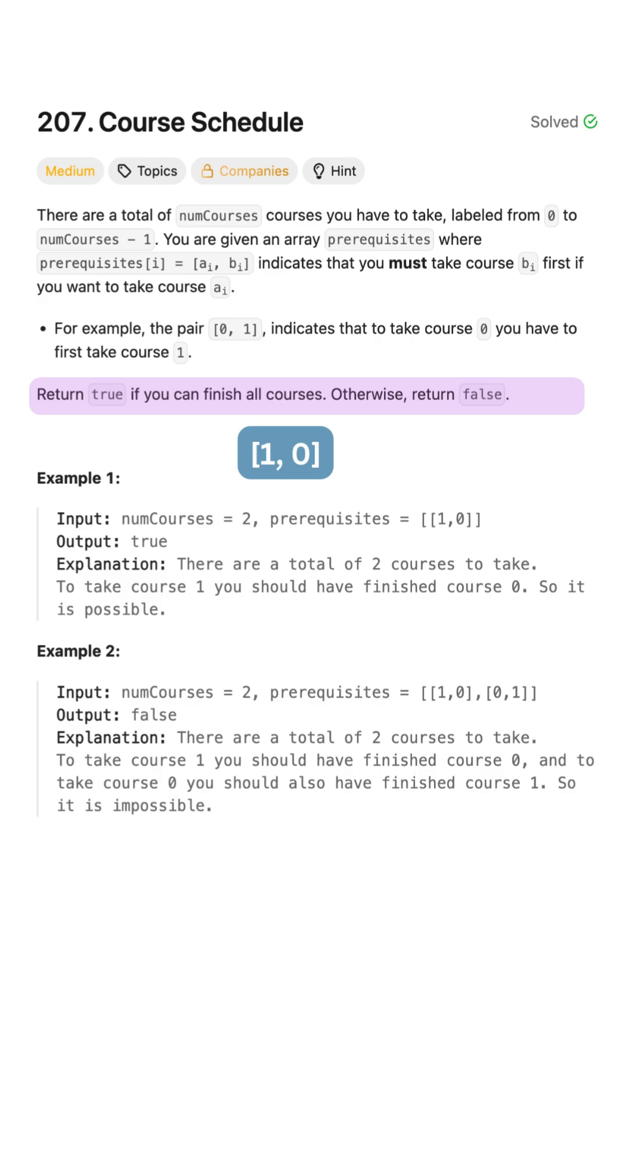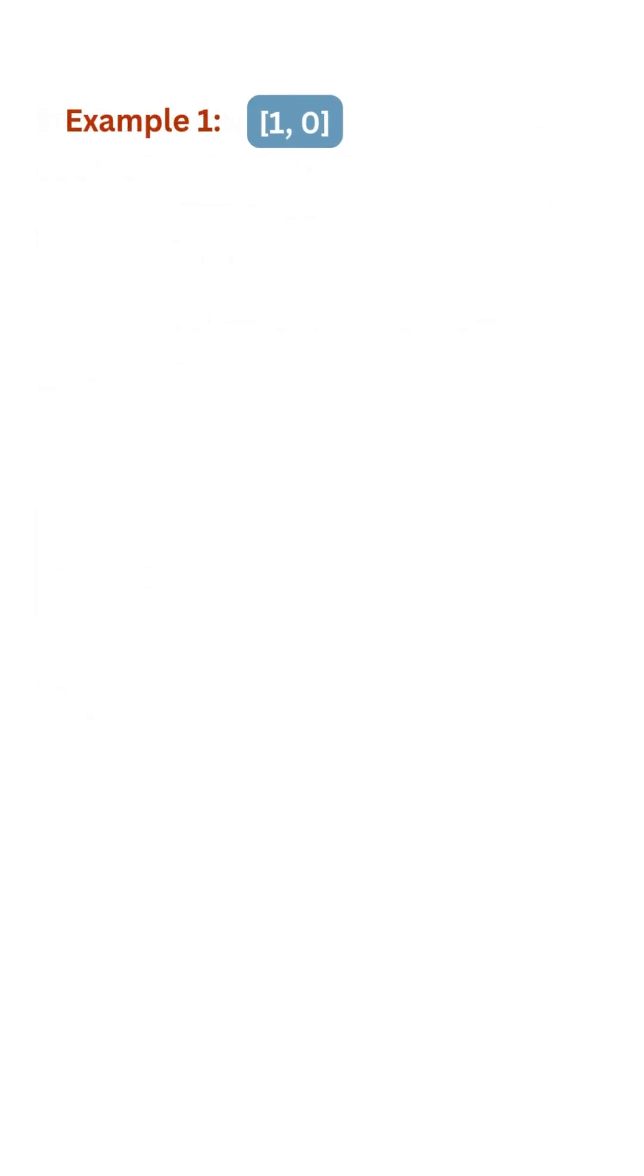Since course 0 is the prerequisite of course 1, we can model this as a graph where each course is a node, and there's a directed edge from 0 to 1 showing the dependency. Because there are no cycles in this graph, all courses can be completed. In their second example,